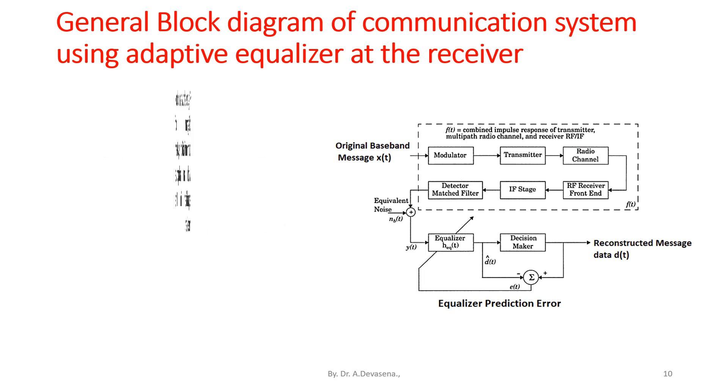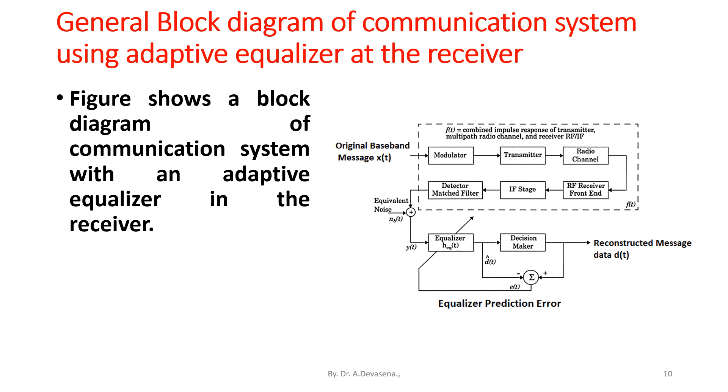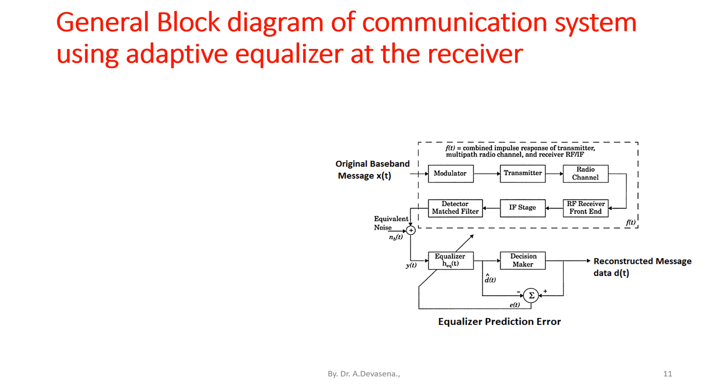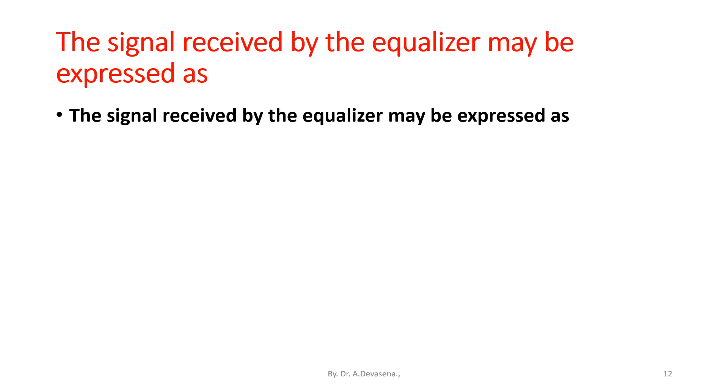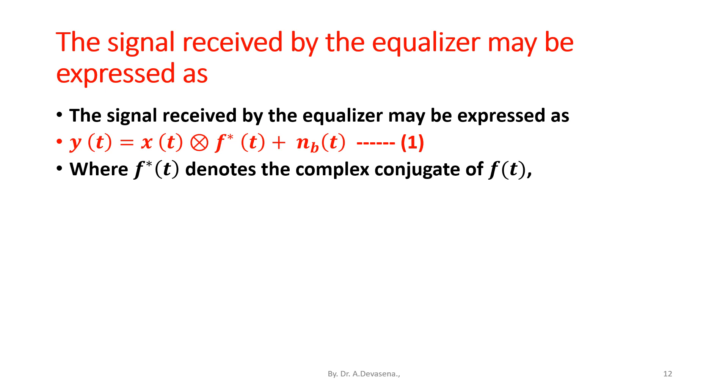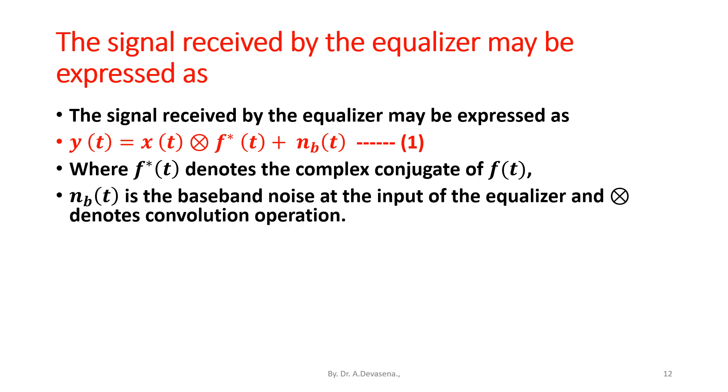Figure shows a block diagram of communication system with an adaptive equalizer in the receiver. If x(t) is the original information signal and f(t) is the combined complex baseband impulse response of the transmitter, channel, and the RF IF sections of the receiver. However, the signal received by the equalizer may be expressed as y(t) = x(t) ⊗ f*(t) + n_b(t). Consider this as equation 1 where f*(t) denotes the complex conjugate of f(t). Then, n_b(t) is the baseband noise at the input of the equalizer and ⊗ denotes the convolution operation.